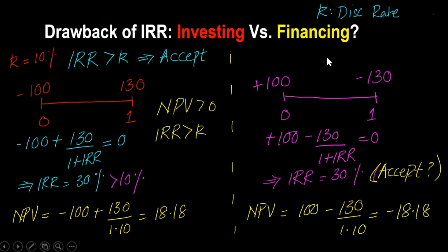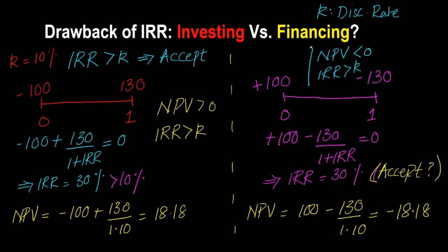That is interesting — what is happening here is that the NPV is coming out to less than 0, but the IRR is still greater than the discount rate. All of a sudden, that consistency we talked about between NPV and IRR is no longer holding. NPV is telling you to not undertake this project because it is negative NPV, but the standard IRR rule — IRR greater than discount rate — is telling you to accept it. What is going on?